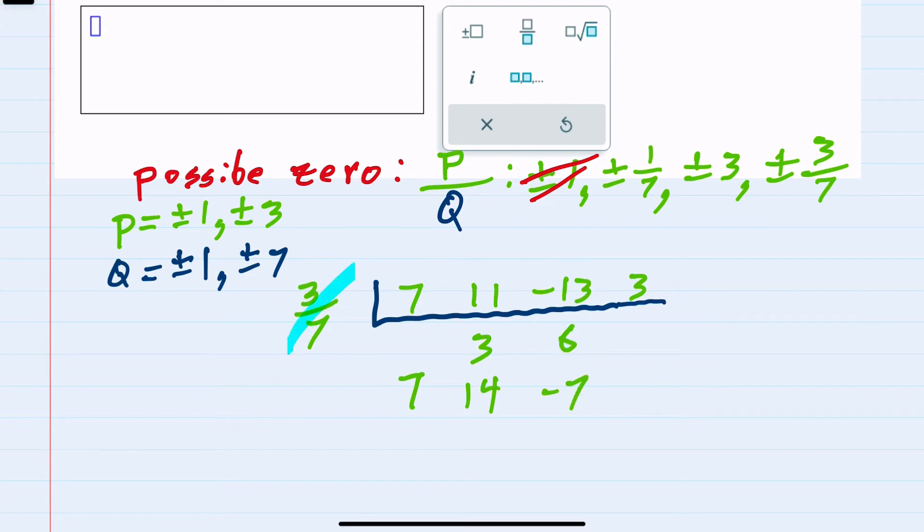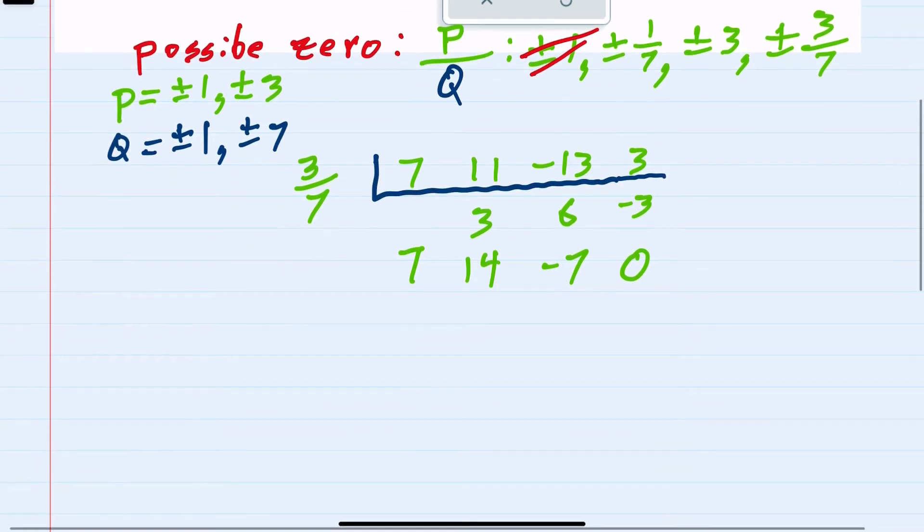So now when we add we get negative seven, and then multiplying three sevenths times negative seven would be negative three, adding gives us zero. So with no remainder, that means that three sevenths is a zero for this function.